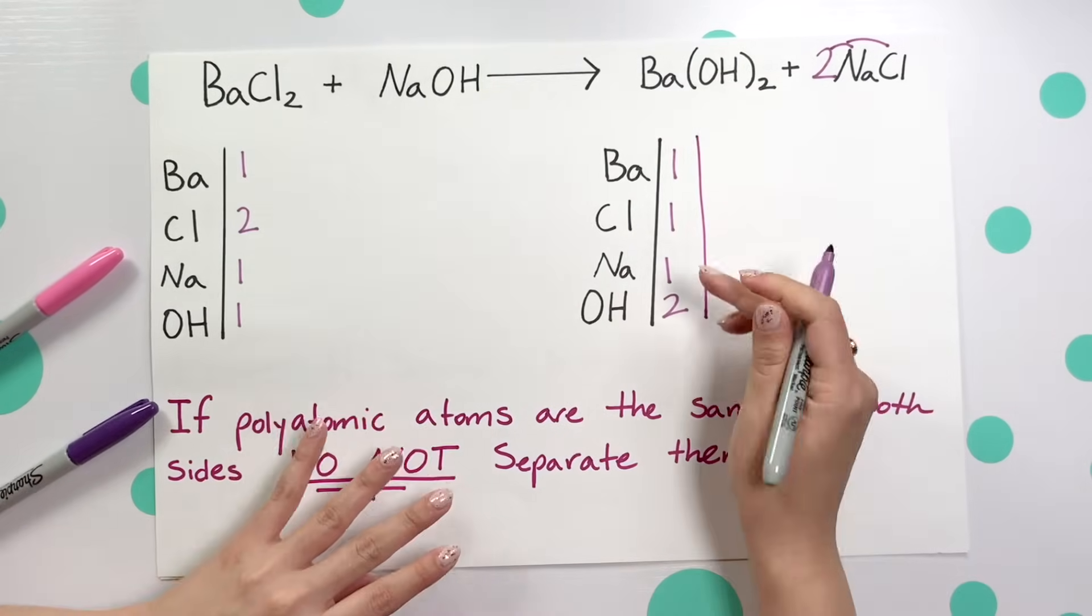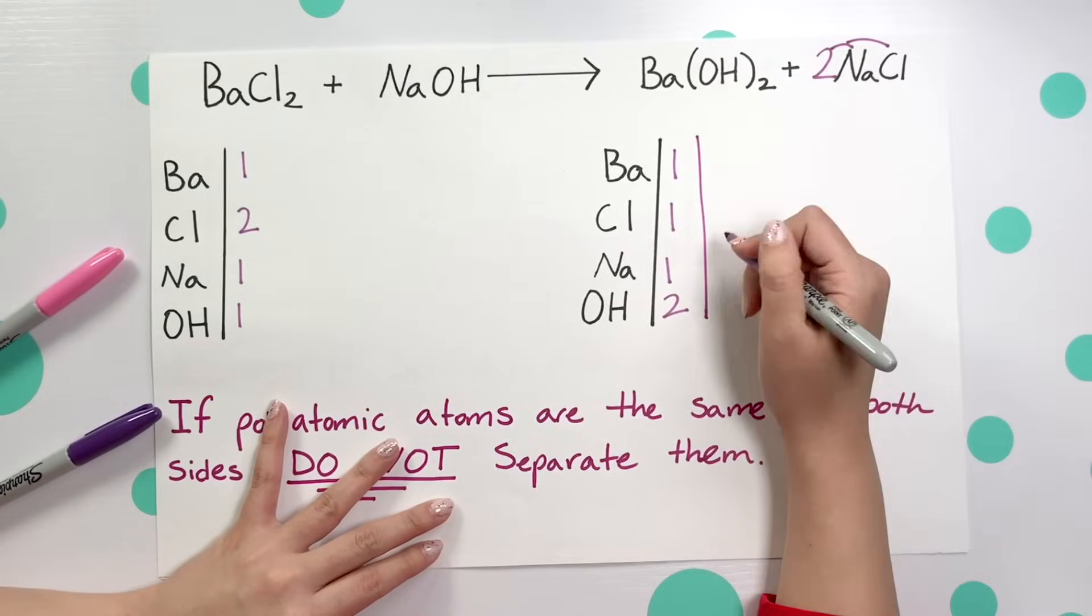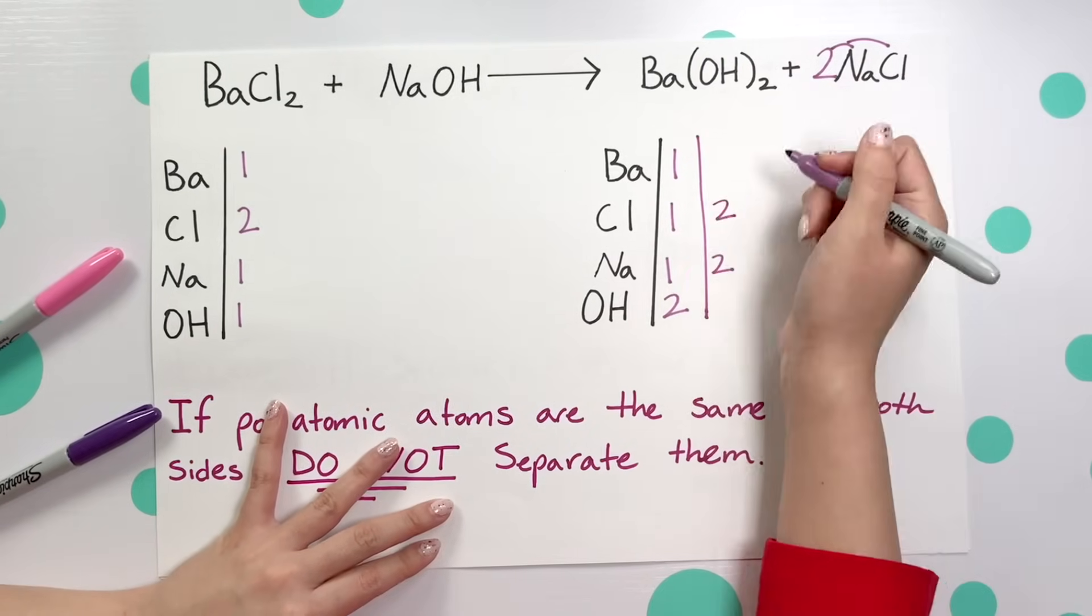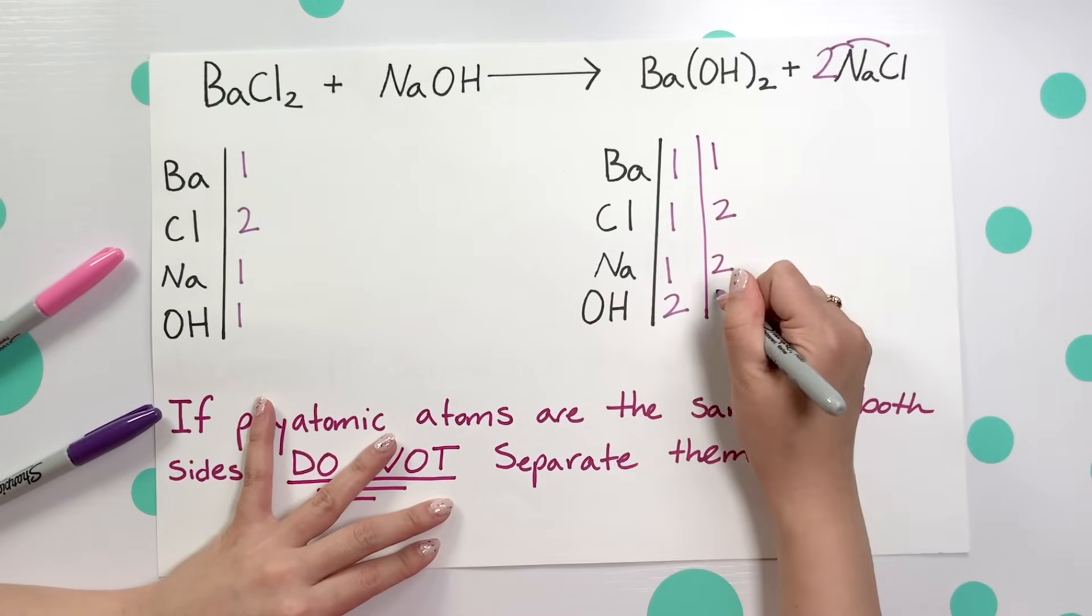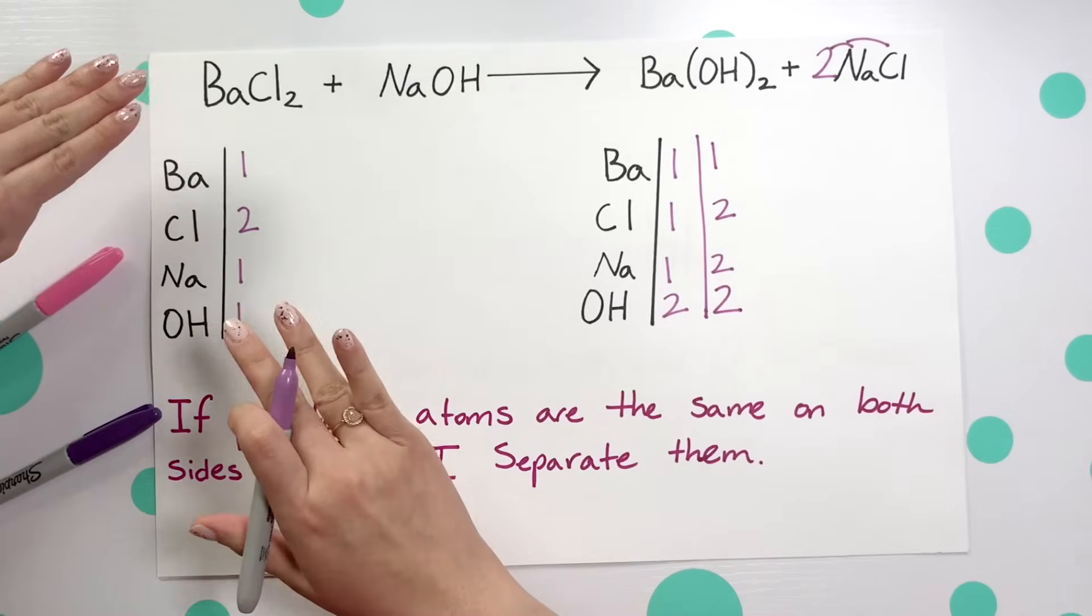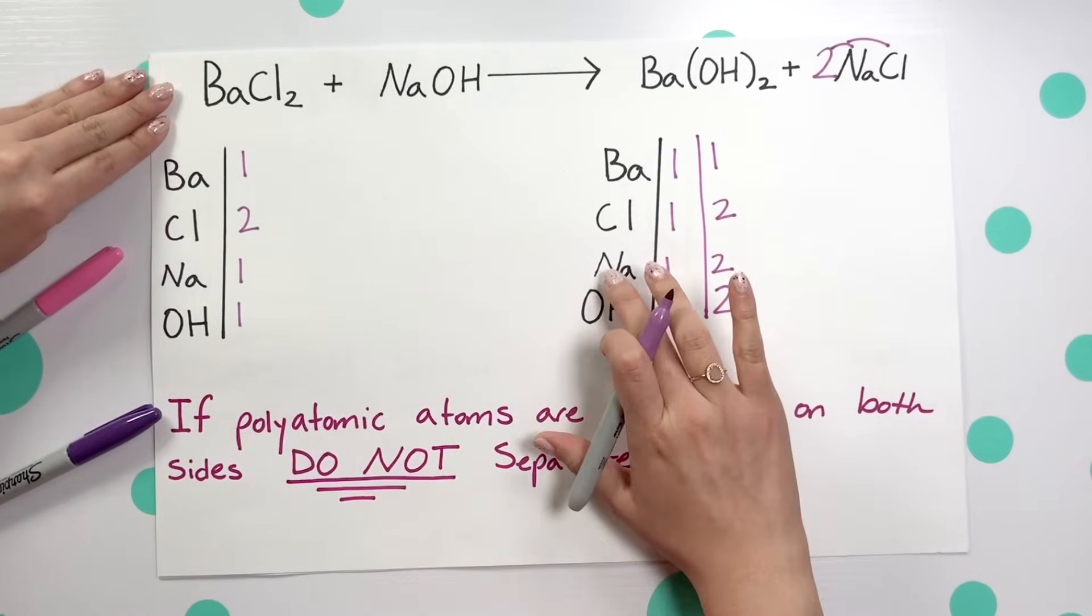If we were to recount everything we'll see that we have two Nas and now we have two chlorine, but nothing changed with barium or our OH, we still have two. Now looking on the reactant side I'm going to now continue to balance out the Na.